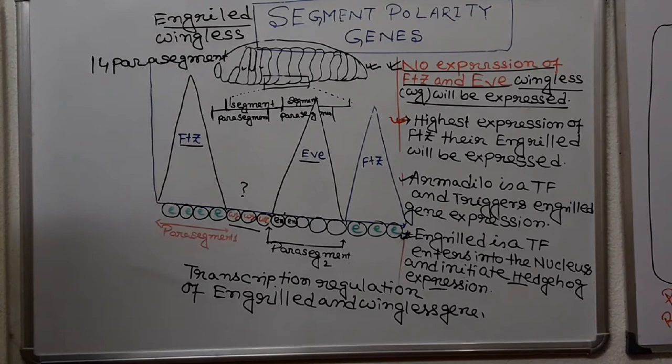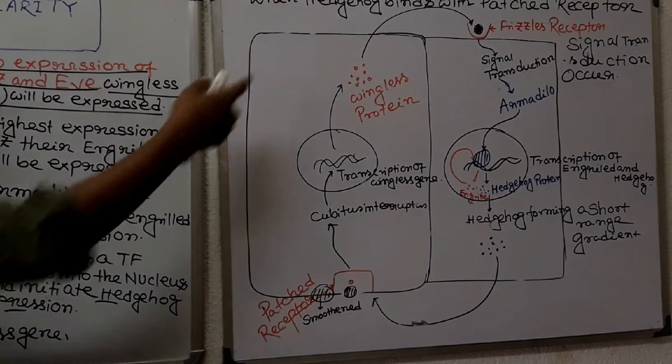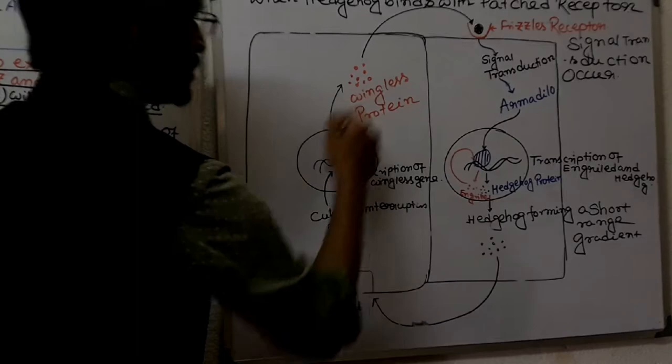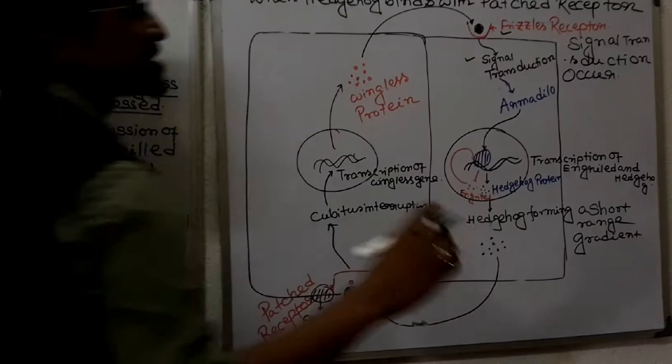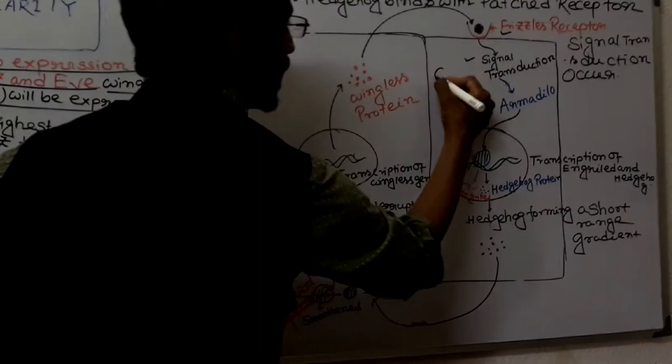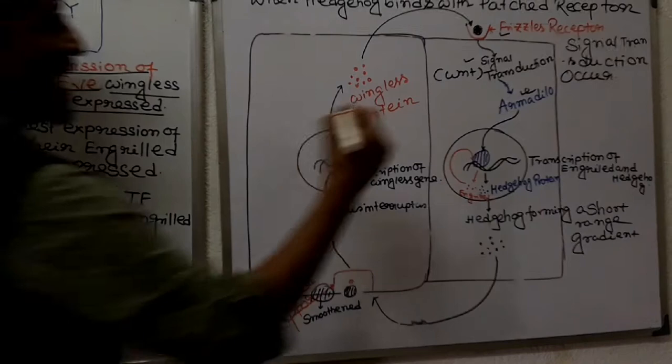Looking at how this expression occurs: wingless binds to the frizzled receptor. Signal transduction then occurs — WNT signaling occurs. This WNT signaling activates armadillo. Armadillo is the homolog of beta-catenin.